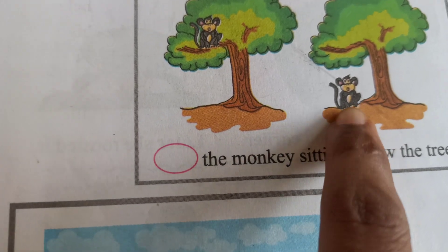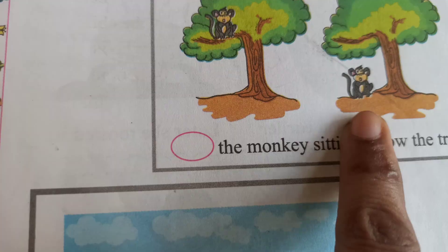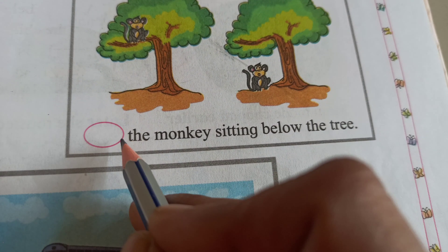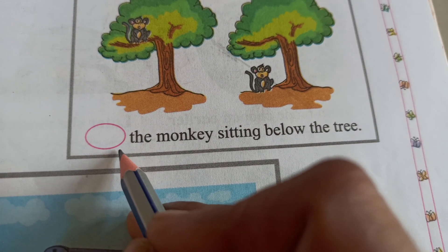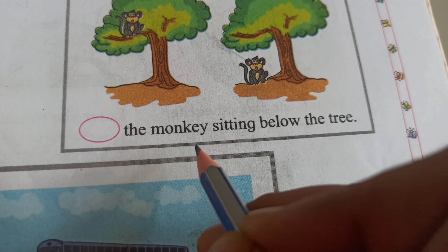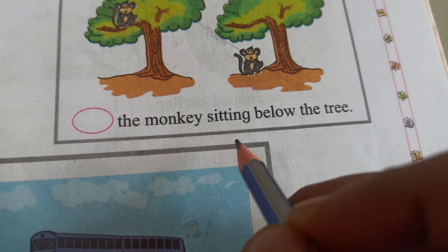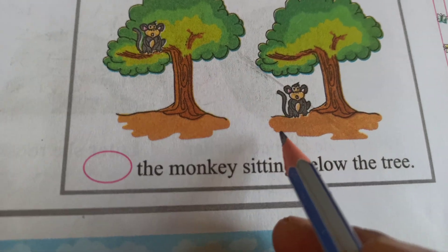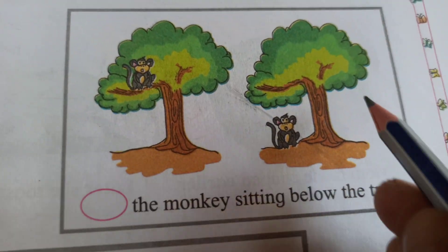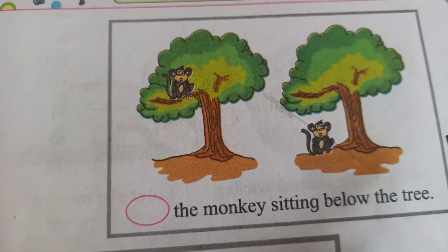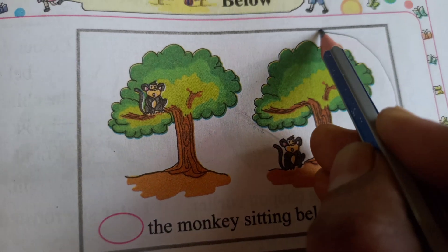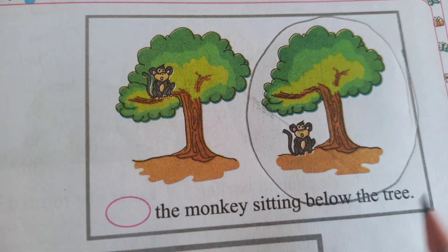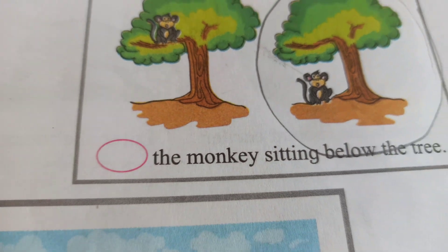Down, on the floor. Here is a circle — so we read: circle the monkey sitting below the tree. This monkey is sitting below the tree, so circle this one tree. Very good! Do it fast.